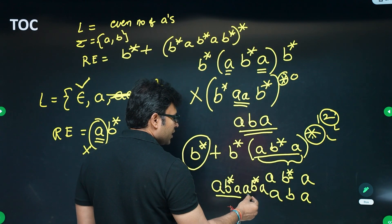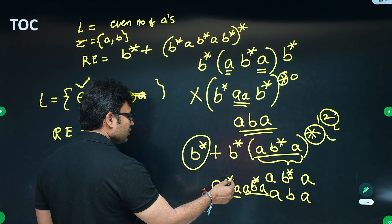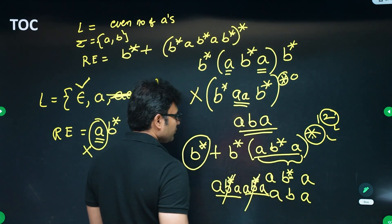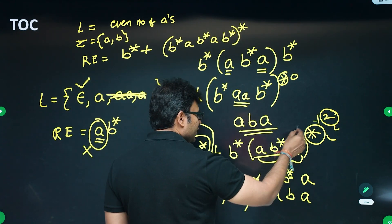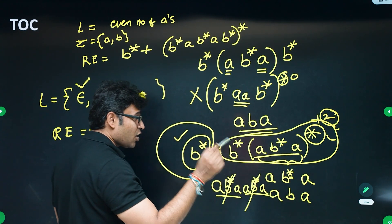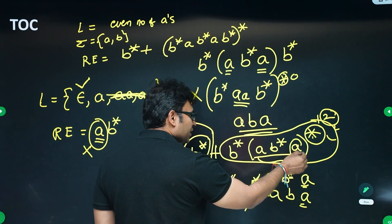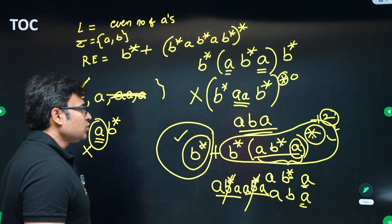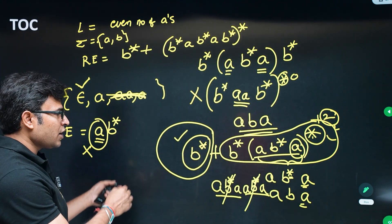So all strings with a's generated by b*ab*a*a* end with 'a'. This means strings like 'ab' — which has even number of a's and ends with 'b' — cannot be generated. If you can't use intuition directly, use the method: take example strings in the language, check if they are generated; take strings not in the language, check they are not generated.